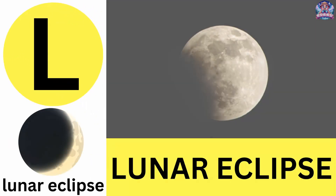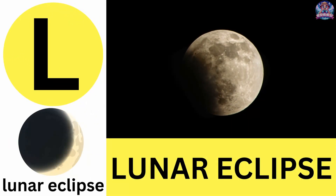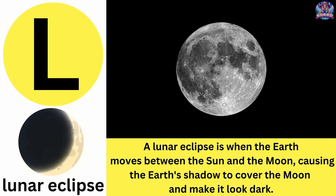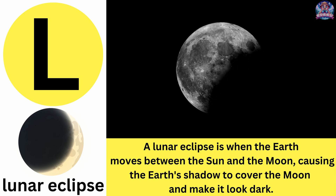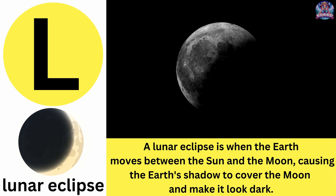L. L is for lunar eclipse. A lunar eclipse is when the Earth moves between the sun and the moon, causing the Earth's shadow to cover the moon and make it look dark. Lunar eclipse.